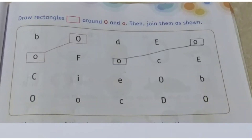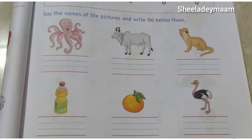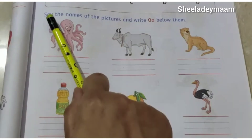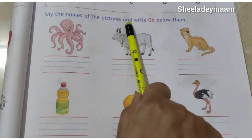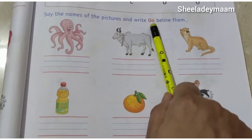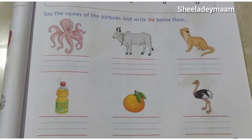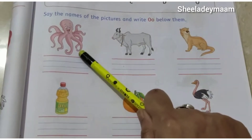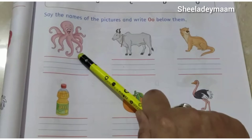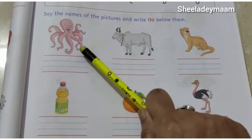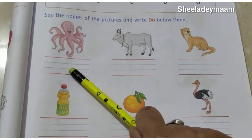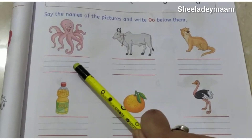Now let's move on to the next question. And our last question is: say the names of the pictures and write capital letter O and lowercase o below them. So in this question, we have to write capital letter O and lowercase o below the picture. And our first picture is — tell me, children, what is this? This is an octopus. O for octopus. Now here we will write capital letter O and lowercase o.